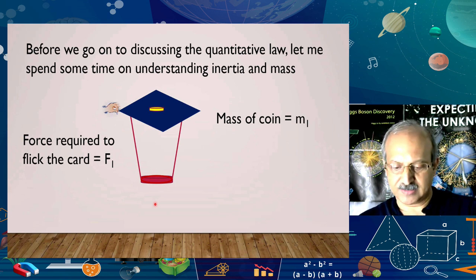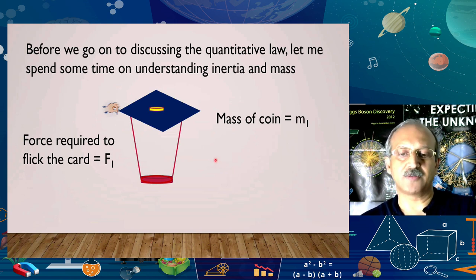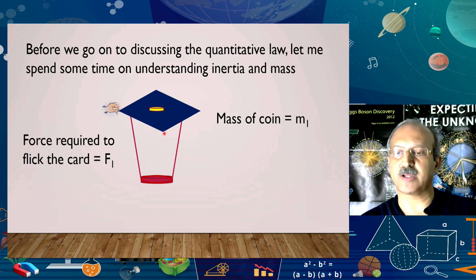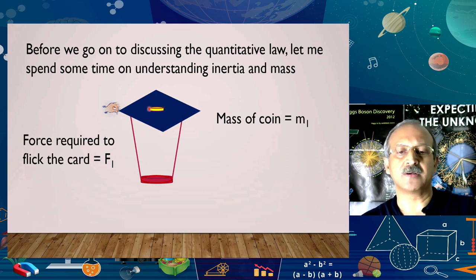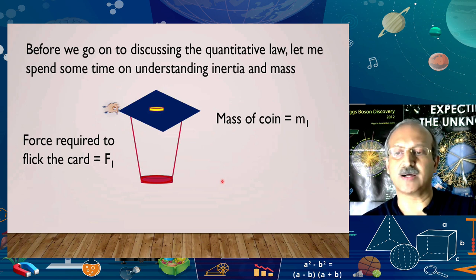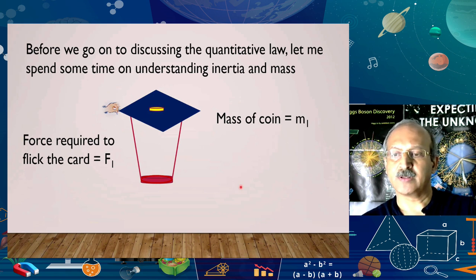Here is an experiment all of you can do at home. I have a tumbler, and on this tumbler I have a card — like a postcard or a greetings card, just tear off one part and place it there. On top of the card, place a coin. Now what we do is flick the card. The moment we flick the card, the card goes flying off and the coin falls into the tumbler. The coin never goes away with the card.